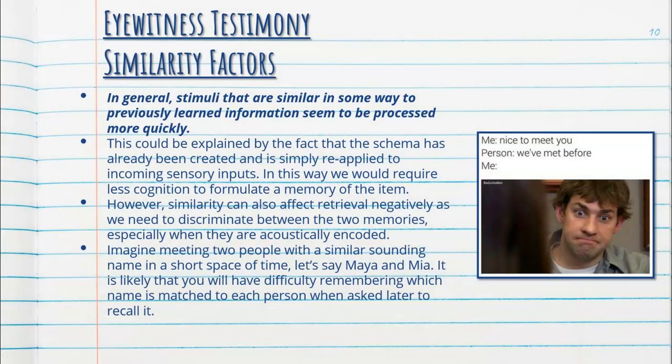Lastly, we have similarity factors. Stimuli that are very similar to previously learned information seem to be processed more quickly, as the schema has already been created and is simply reapplied to incoming sensory inputs, requiring less cognition to formulate a memory. However, similarity can also affect retrieval negatively, as we need to discriminate between two similar memories, especially when acoustically encoded. For example, meeting two people with similar sounding names like Maya and Mia in a short space of time makes it more difficult to recall accurately which name belongs to which person.